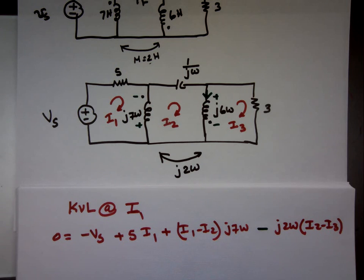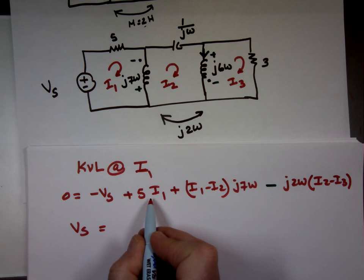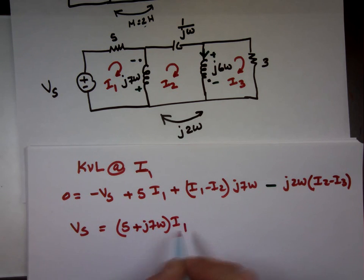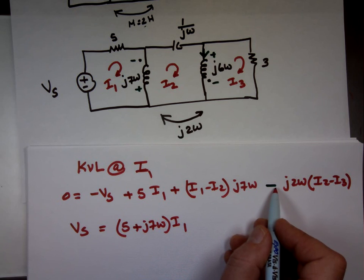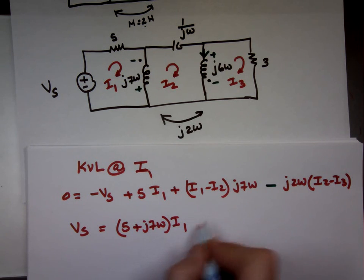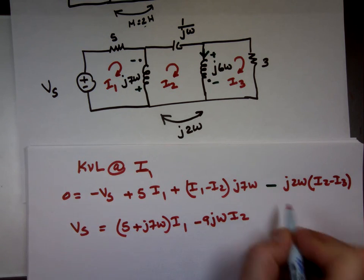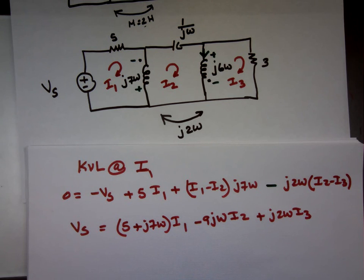Cleaning that up: V_s = (5 + j7ω)·I_1 + (−j7ω − j2ω)·I_2 + (j2ω)·I_3, which is V_s = (5 + j7ω)·I_1 − j9ω·I_2 + j2ω·I_3. That's equation number one.